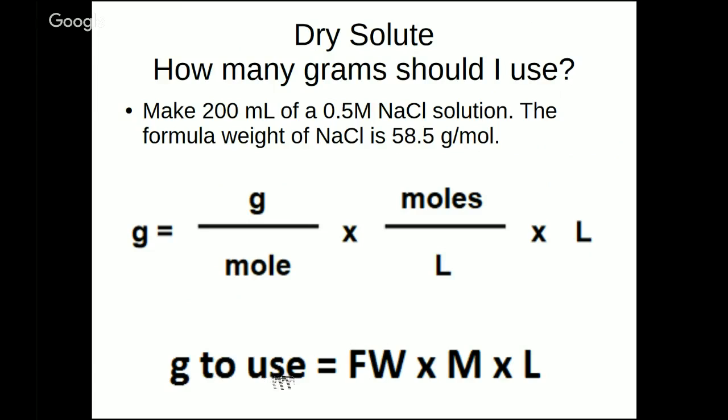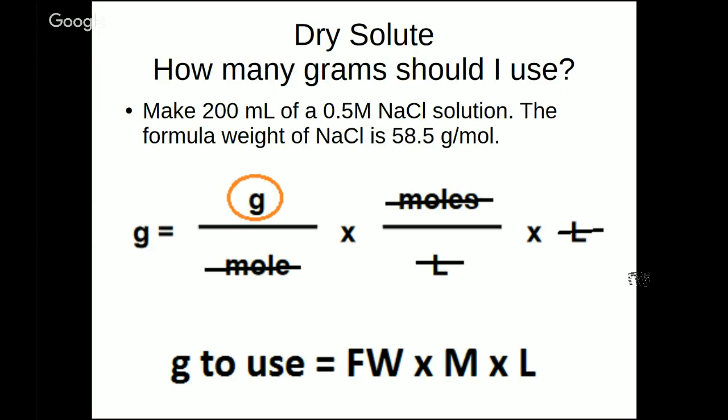Well here's how I think of this formula. Kind of simplify it in my brain. The grams I want to use is equal to the formula weight of that chemical. That's the grams per moles part. Times the molarity. That's how strong I want the solution to be. How concentrated I want it to be. And that's this part expressed moles per liter. Times liters. Liters is the volume. That's how much I want to make. So this formula is actually pretty simple. The grams to use is equal to the formula weight of the chemical times how concentrated I want it to be times how much I want to make.